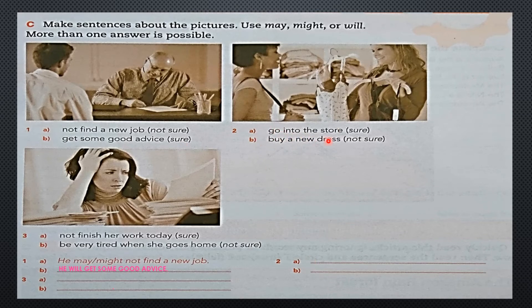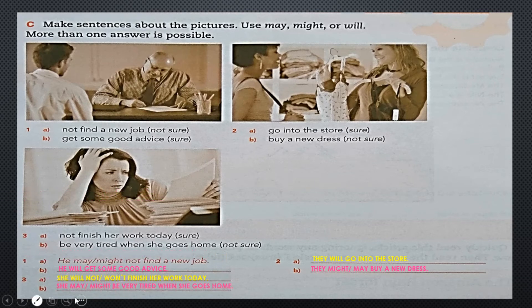What happened with number two? In number two it says: go into the store, sure; buy a new dress, not sure. What happened with number two? Sure means will. They, because we're talking about them, they will go into the store. Not sure means not sure. You can use may or might, either of the two, or you can place both. They may or might buy a new dress. It's not that both go together in the sentence, guys. We place may or might because either one can be the correct alternative for the sentence. Number three: not finish her work today, sure; be very tired when she goes home, not sure. Number three: She will not, or also the negative of will not would be won't, finish her work today. And the next part: be tired when she goes home, not sure. In that case, she may or might be tired when she goes home. So we're emphasizing the same thing again. We're always remembering that we have to use correctly may, might, and will today.